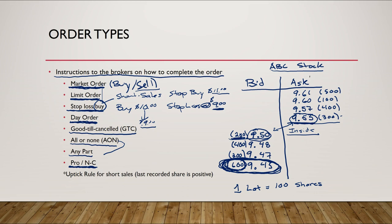One last point: if an order is a short sale, that must be noted on the order. There is an uptick rule for short sale transactions, which says the last recorded share price has to be positive — on an uptick — before the short sale can be processed. The reason behind this is to prevent excessive speculation on the short side from significantly depressing prices. Without this rule, multiple short sellers could continuously push prices lower, so the uptick rule helps eliminate that kind of downward price manipulation.